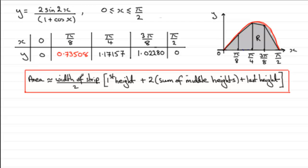It's equal to half the width of a strip. So the width of a strip will be obviously pi upon 8 in this particular example. And then it's the first height, that'll be the first value here, plus twice the sum of all the middle heights, that'll be that one plus that one plus that one, and then plus the last height, which will be in fact 0.